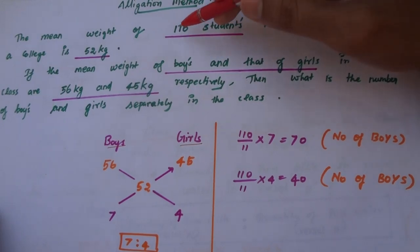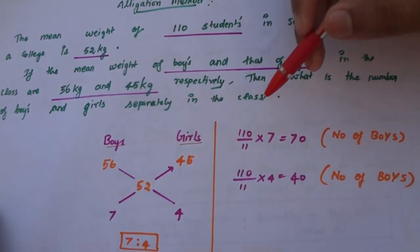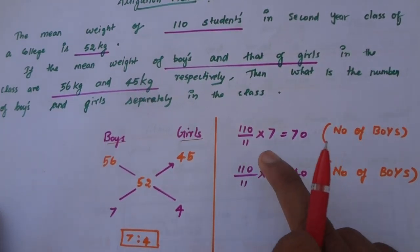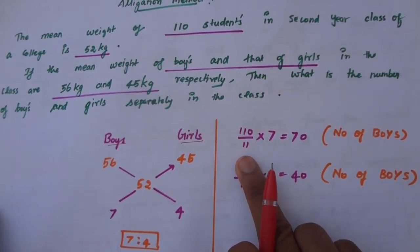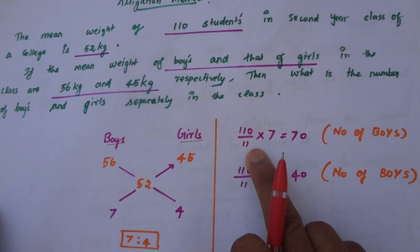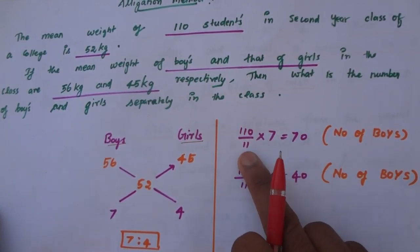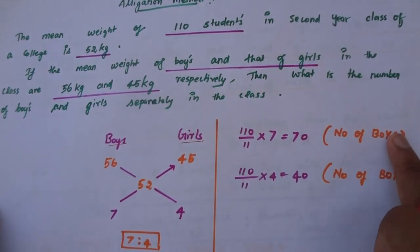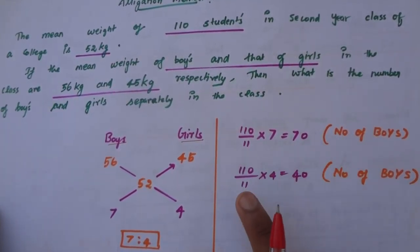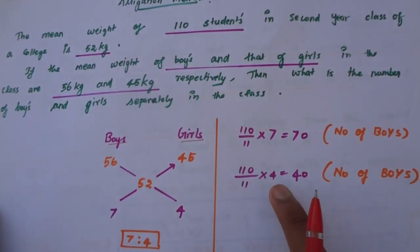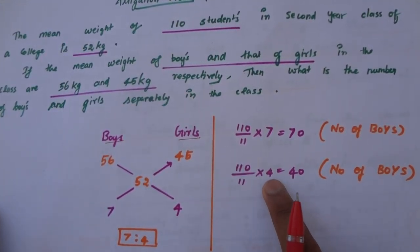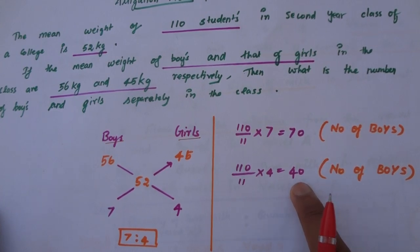The number of boys and girls: multiply by 11 into 4. So 4 is the number of girls' ratio part. That gives us 70 boys and 40 girls.